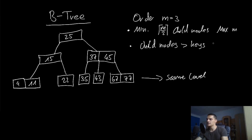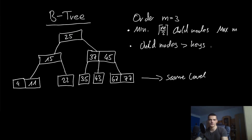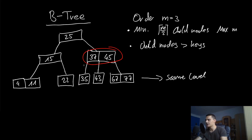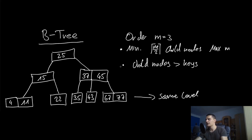Let's look at this example of a B-tree. We're not going to cover the exact formal definitions too much; we'll just look at what a B-tree has to be and how to rebalance it, insert elements, find elements, and so on. Every B-tree has a certain order — in this case the order is three, so m equals three. This means we can have a maximum of m child nodes. You can see here we have three child nodes as a maximum.